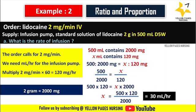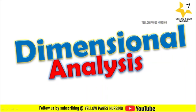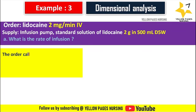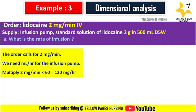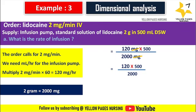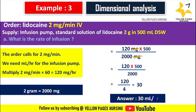Cross-multiplying: 500 × 120 ÷ 2000 = 30. We set 30 mL per hour in the infusion pump. Now using dimensional analysis: doctor's order lidocaine 2 mg per minute IV, supply infusion pump, standard solution of lidocaine 2 gram in 500 mL D5 water. Convert 2 mg/min × 60 = 120 mg per hour. Available dose: 2 g = 2000 mg in 500 mL. So: 120 mg × 500 ÷ 2000 mg — the mg units cancel — = 120 × 500 ÷ 2000 = 120 ÷ 4 = 30. We set 30 mL per hour in the infusion pump.